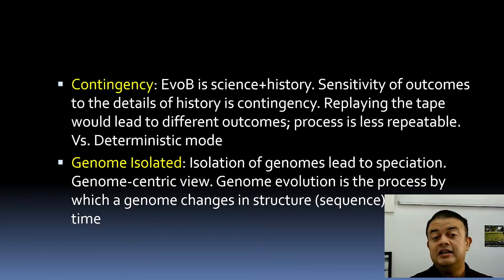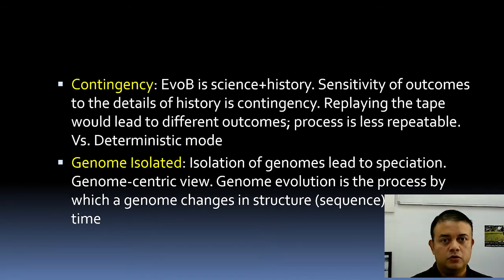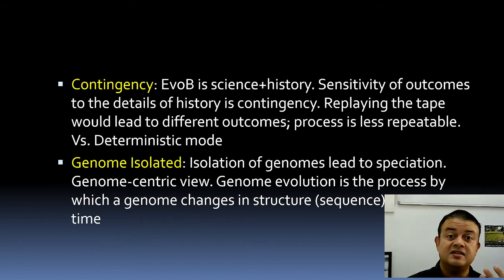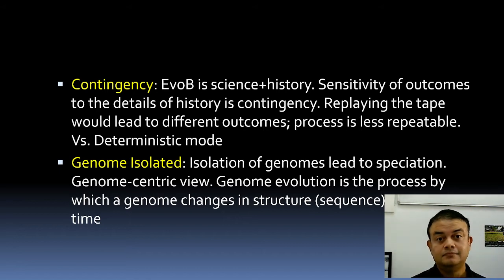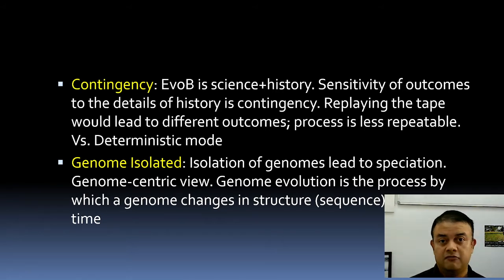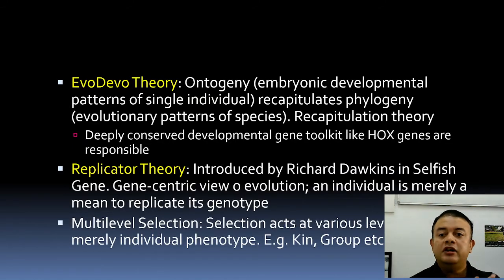Genome isolation means the isolation of genomes can lead to speciation — speciation happens at the genomic level. This is a genome-centric view, not gene-centric, and most evolutionary biologists disagree with this point. Genomic evolution is the process by which a genome changes its structure, sequence, or size over time — including how the genome is organized, telomeres, intronic regions, transposons, and transposable elements inside the genome. Everything changes over time, and that is called genomic evolution.